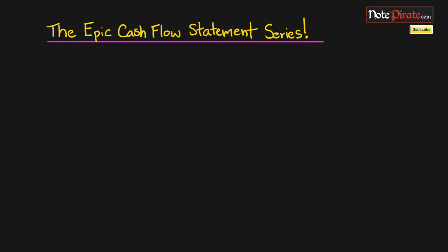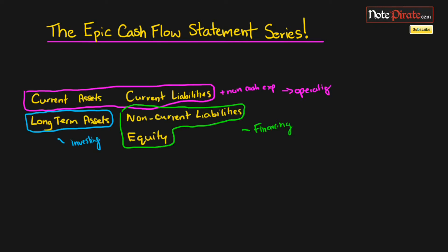I've created this skeleton of a balance sheet, which shows the different parts of the balance sheet: the current assets, long-term assets, current liabilities, non-current liabilities or long-term liabilities, and equity. The reason I've separated them into three sections is because there are three sections on the cash flow statement: the operating activity section, the investing activity section, and the financing activities section.